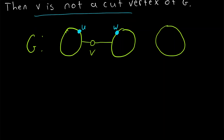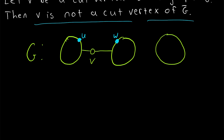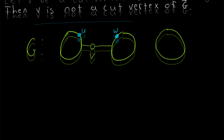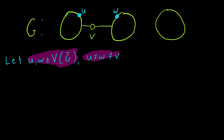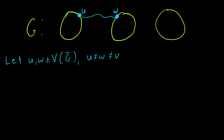In order to prove that V is not a cut vertex of G complement, we're going to prove that any pair of distinct vertices that are not equal to V must be connected by a path that doesn't contain V in the complement of G. That will prove V can't be a cut vertex of G complement, because deleting it will not disconnect any pair of vertices.